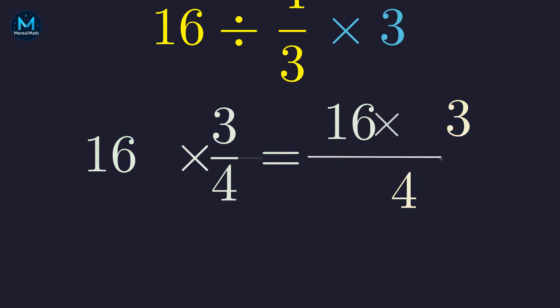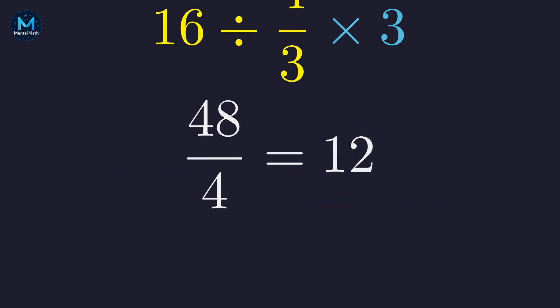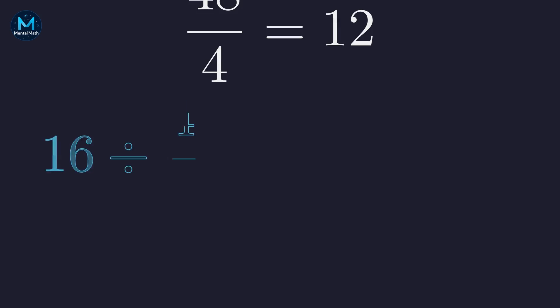16 times three-fourths, 48 divided by four equals 12. Now we're left with 12 times three. Just a simple multiplication. 12 times three gives us 36.